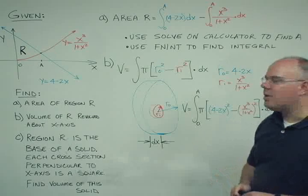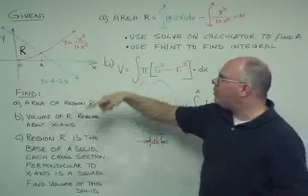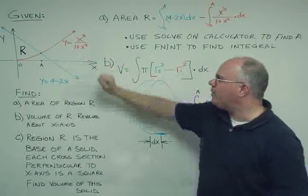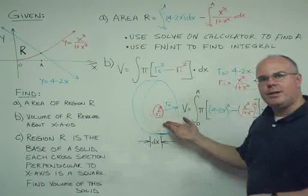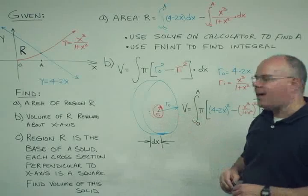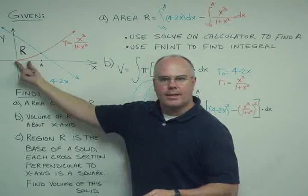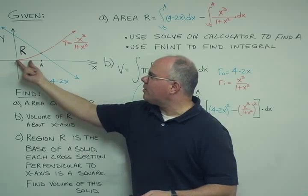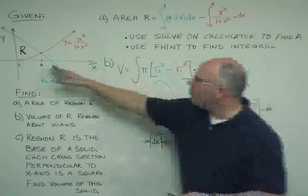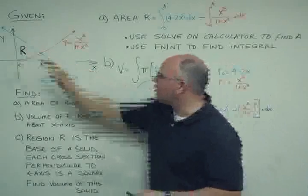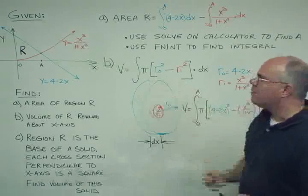The second part asks us to find the volume of region R if it were revolved about the x-axis. So we're going to revolve R about the x-axis. I've created a diagram here. This looks something like a washer. I'm looking at one increment along the x-axis and I want to take one increment and look at that as a revolved volume. If I have my blue curve as my outer radius, let's call it R outer or RO.